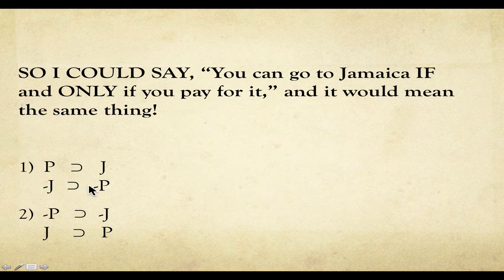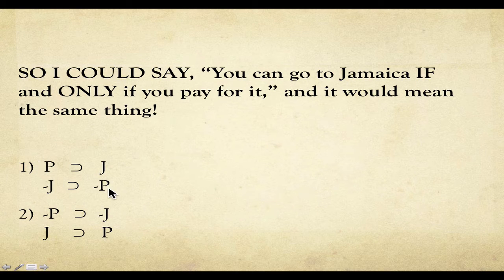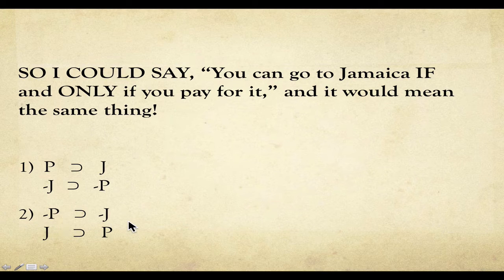That tells us: I'm either going to pay for it and go to Jamaica, or I'm not going to Jamaica and not paying for it. I'm either going to do both things or neither of those two things. That's a 'both or neither' — a same-sign biconditional, because we've got the same sign on both sides of the horseshoe.